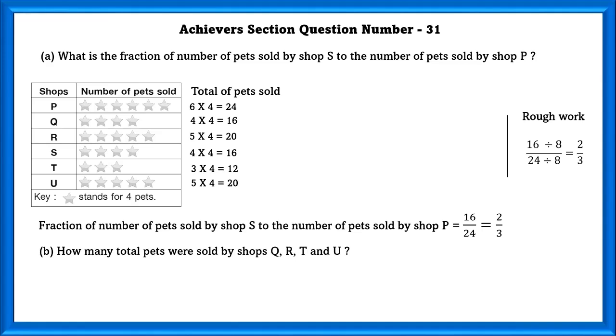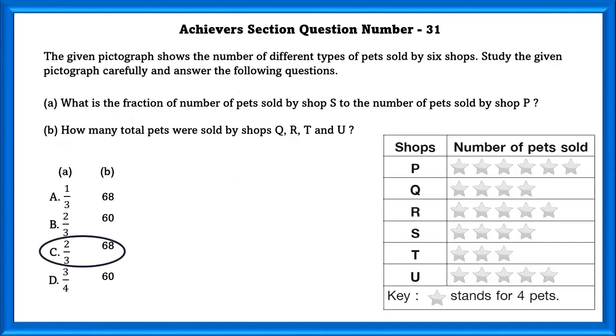Part B: How many total pets were sold by shop Q, R, T and U? If we add Q, R, T and U, we will get 68. So the answer is C.